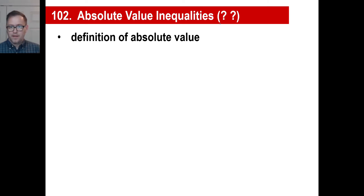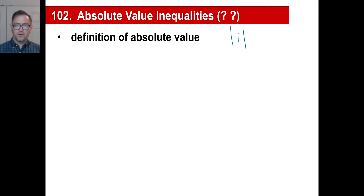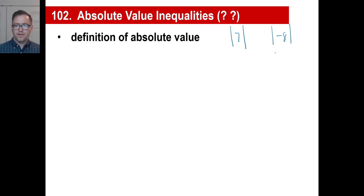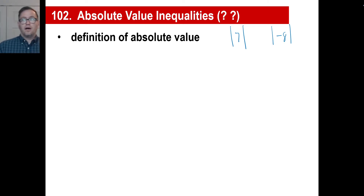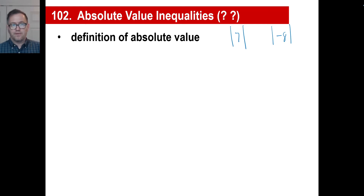So if we have the absolute value of seven, well, how far away from zero is seven? It's seven. Now, if we have the absolute value of negative eight, the question is how far away from zero is negative eight? And the answer is eight. Math nerds around the world argue about this — is it positive eight or is it just eight? I don't really care. I'd rather argue about the Kardashians or something even more stupid than that.